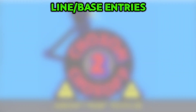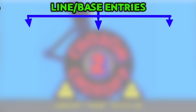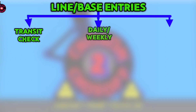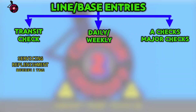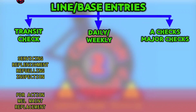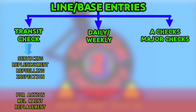Let's talk about line or base maintenance entries. It can be further divided into transit check, daily or weekly check, A check, or if you are in base, major checks. Each one will have subtasks which can be made into a single entry. For example, transit check will have servicing of waste and water, replenishment of oil, refueling, inspection, and it can also have unscheduled tasks like PDR reported requiring rectification, or invoking any MEL requiring maintenance action or replacement of a component. Likewise, in daily and weekly we do servicing.